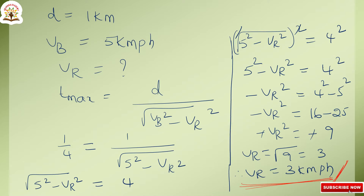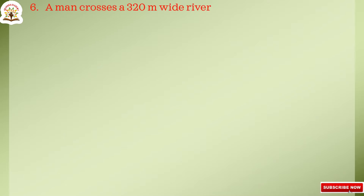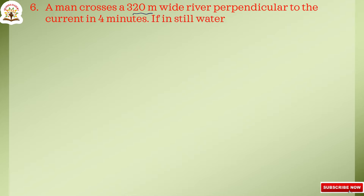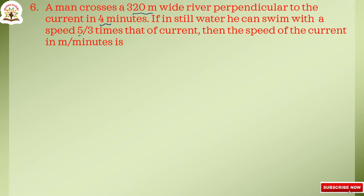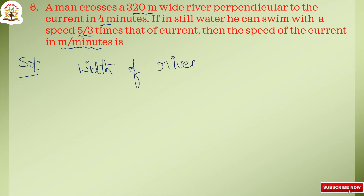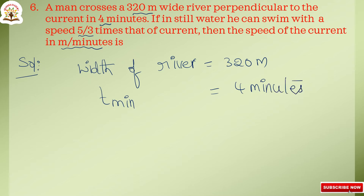Next, we go to the sixth question. A man crosses a 320 meters wide river perpendicular to the current in 4 minutes. If in still water he can swim with a speed 5 by 3 times that of the current, find the speed of the current in meters per minute. Width of river is 320 meters and time is 4 minutes.